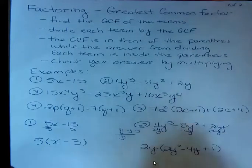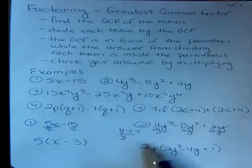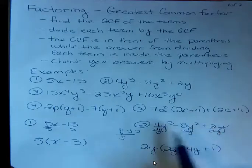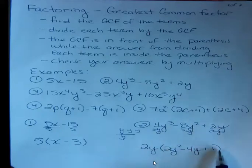And that should make sense, because when I go to distribute back to check, if I didn't have the 1 there, I wouldn't get that third term. So if you had three terms to start with, you need to have three terms in the parentheses.